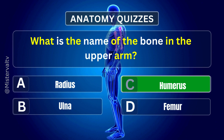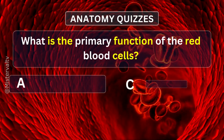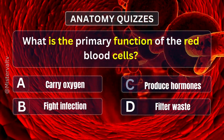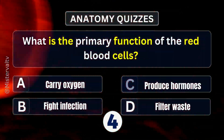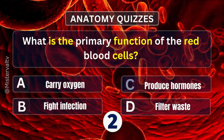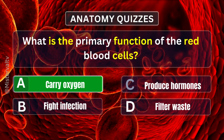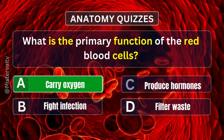What is the name of the bone in the upper arm? Answer. C. Humerus. What is the primary function of the red blood cells? Answer. A. Carry oxygen.